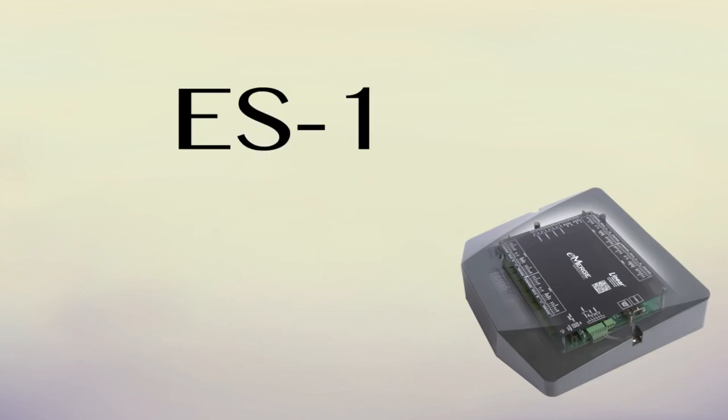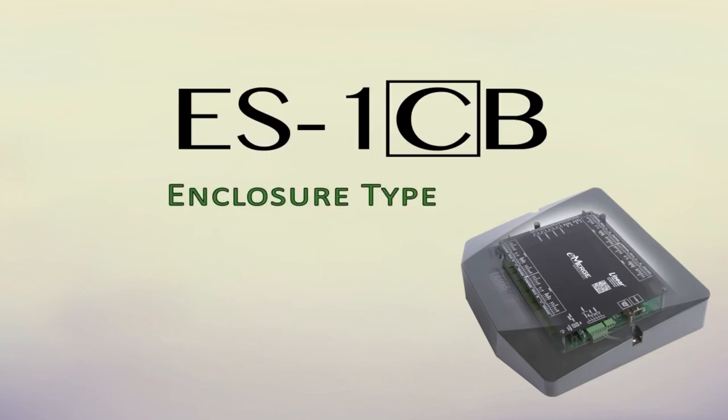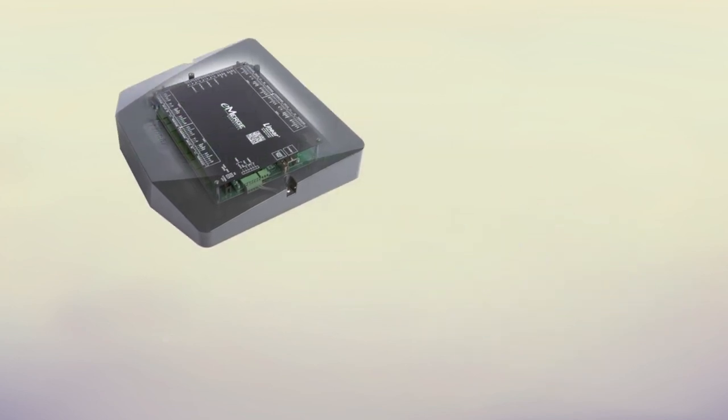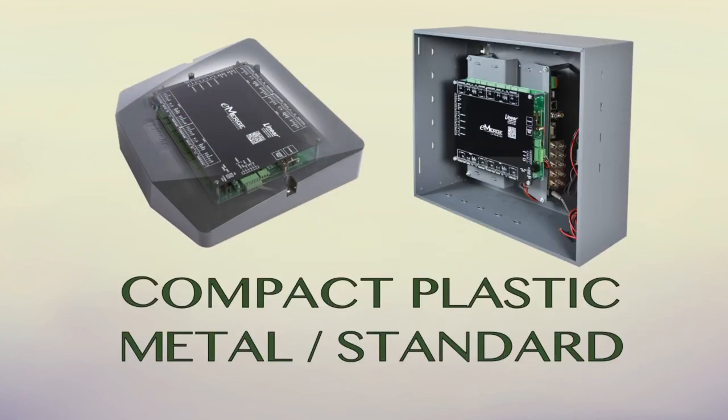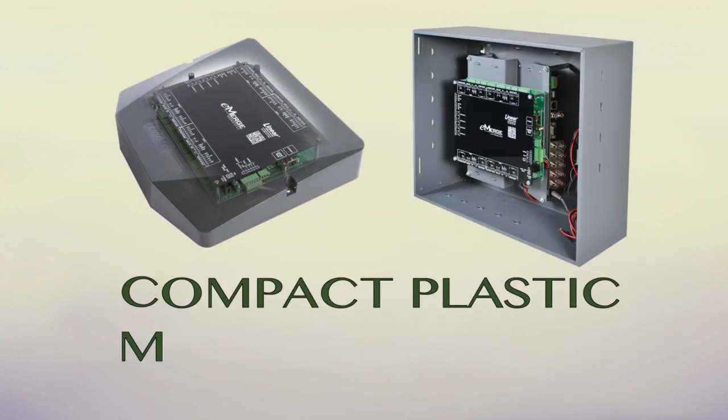Part three of the model number specifies the enclosure type, and there are two options: compact plastic, or C, and metal standard size, or M.